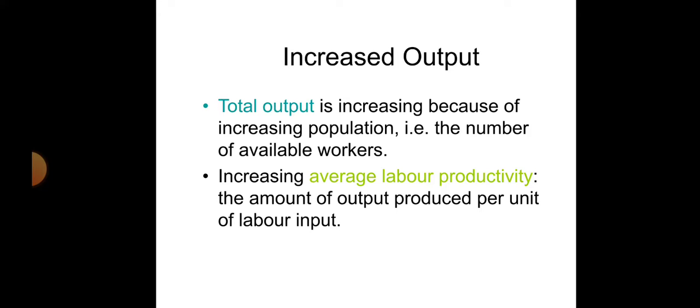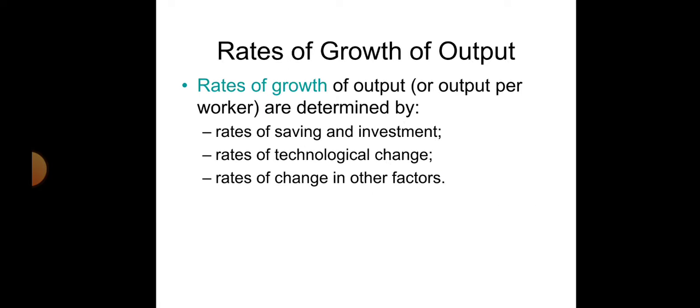Increasing average labor productivity means the amount of output produced per unit of worker input or labor input. Wherever you have more and more population, you have more of the percentage of available workers. This is called labor productivity, or average labor productivity.